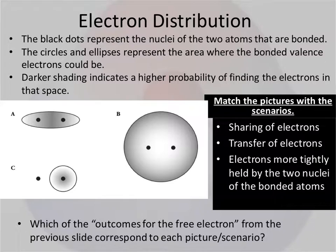Looking at electron distribution, in this representation, the black dots are going to be representative of the nuclei of two different atoms that are bonded together. The circles or ellipses represent the area where the bonded valence electrons could be, so where that shared pair could be. Darker shading indicates a higher probability of finding electrons, so a higher electron distribution density in that area.